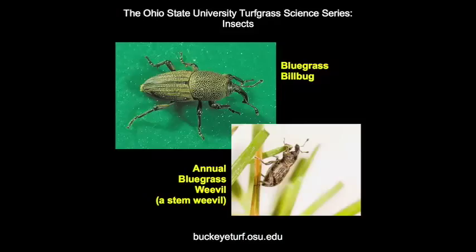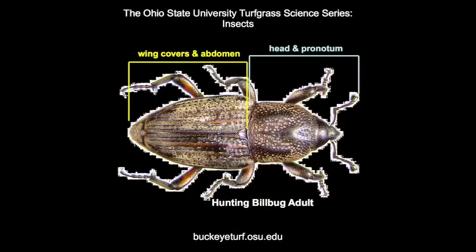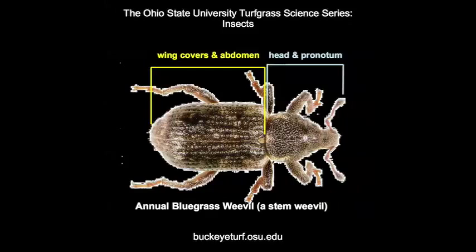Weevils are beetles with a beak-like snout and they have elbowed antennae that end in a club-shaped swelling. Billbugs are weevils in which the head and pronotum — the major section behind the head — are the same length as the wing covers and abdomen. Stem weevils have the length of the head and pronotum shorter than the length of the wing covers and abdomen.